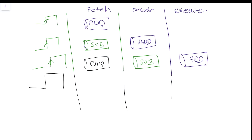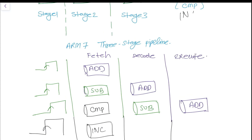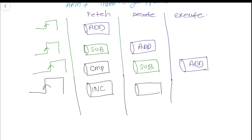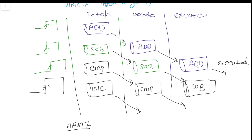In the fourth clock cycle, another instruction such as increment can be fetched, while CMP moves to decode and SUB moves to execute. The result of each executed instruction is stored back into the CPU register. This is the data flow in three-stage pipelining, and it is the oldest pipelining design used by early ARM microcontrollers.